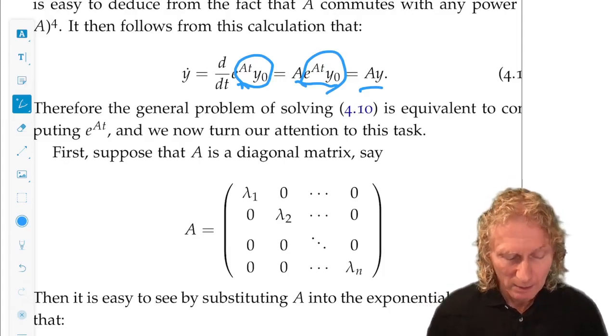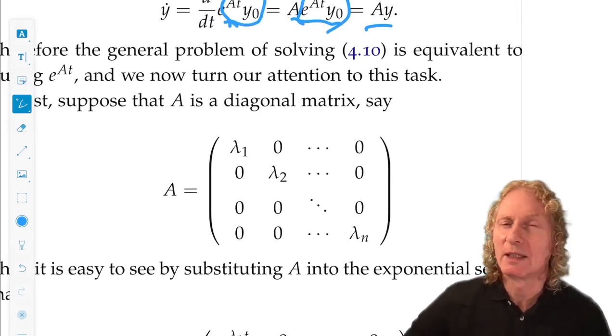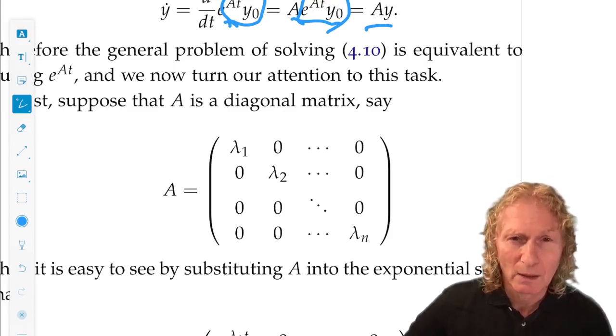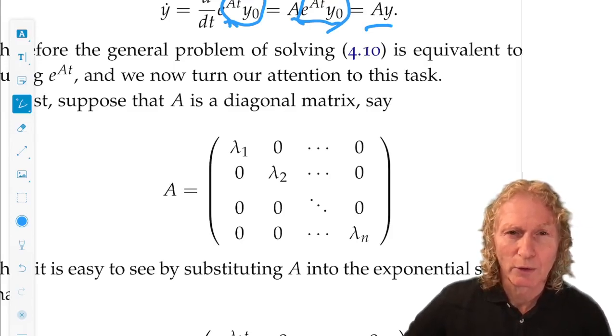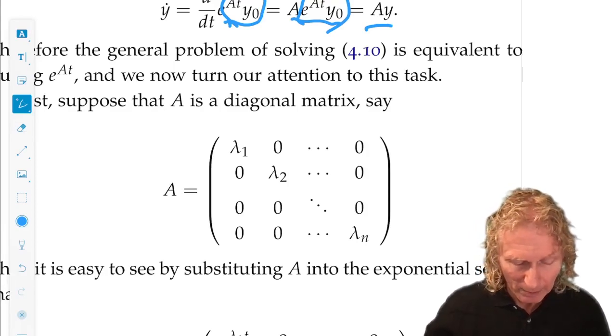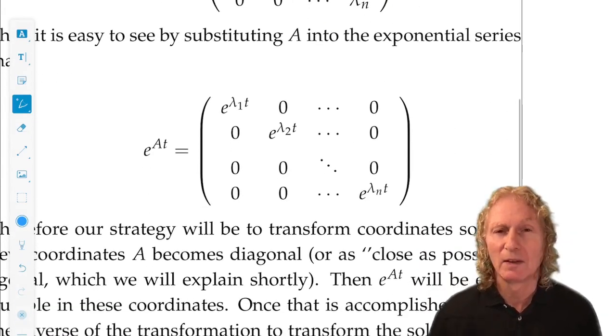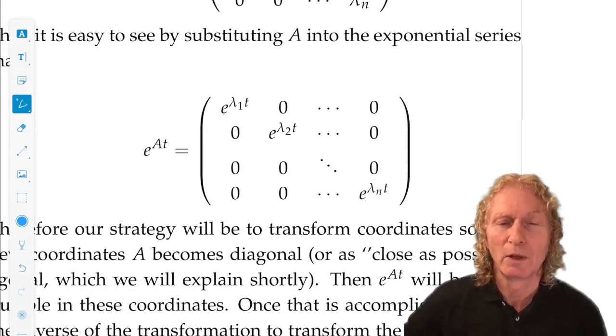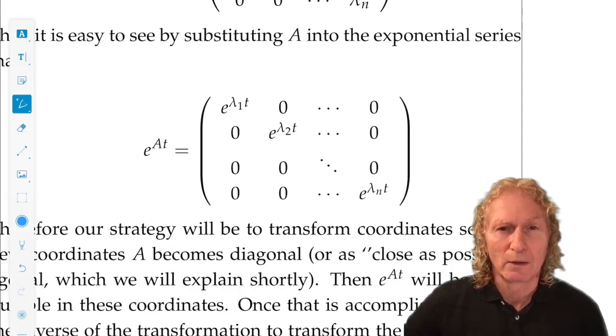All right. Well, if A happened to be a diagonal matrix like this, even n by n, go back and plug it into the exponential series, and you'll see that you have an exponential series for the scalars, the eigenvalues, lambda 1 through lambda n, down the diagonal and zeros elsewhere. So it's very easy to see the e to the At is just the exponential of the eigenvalues along the diagonal in this case.